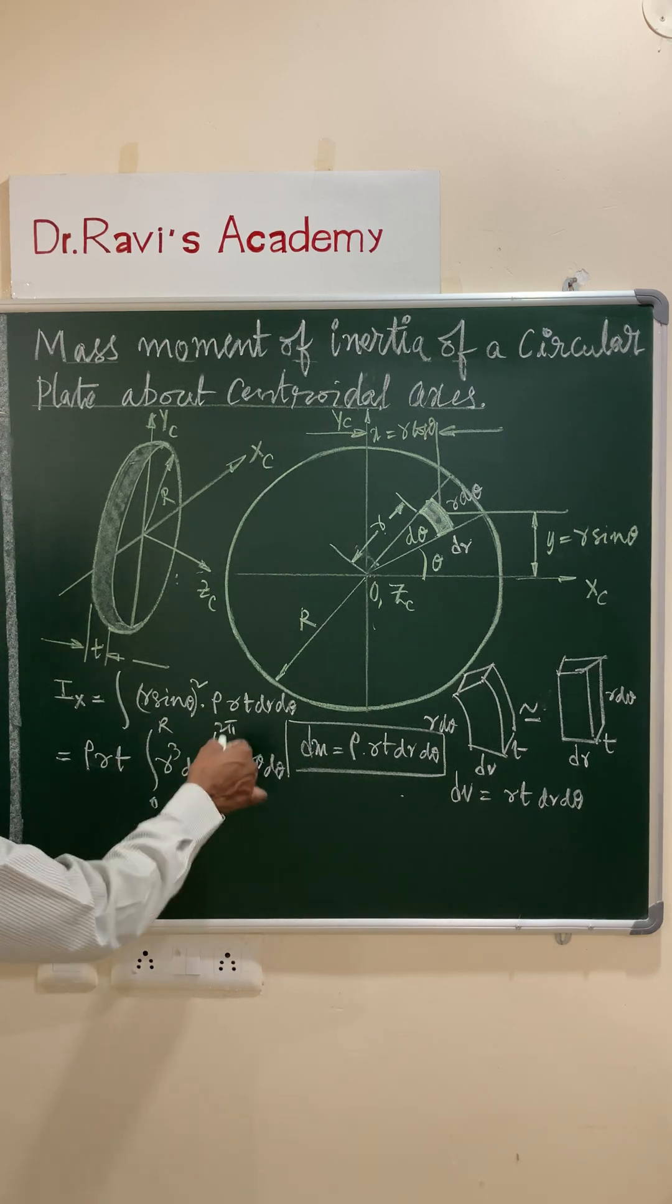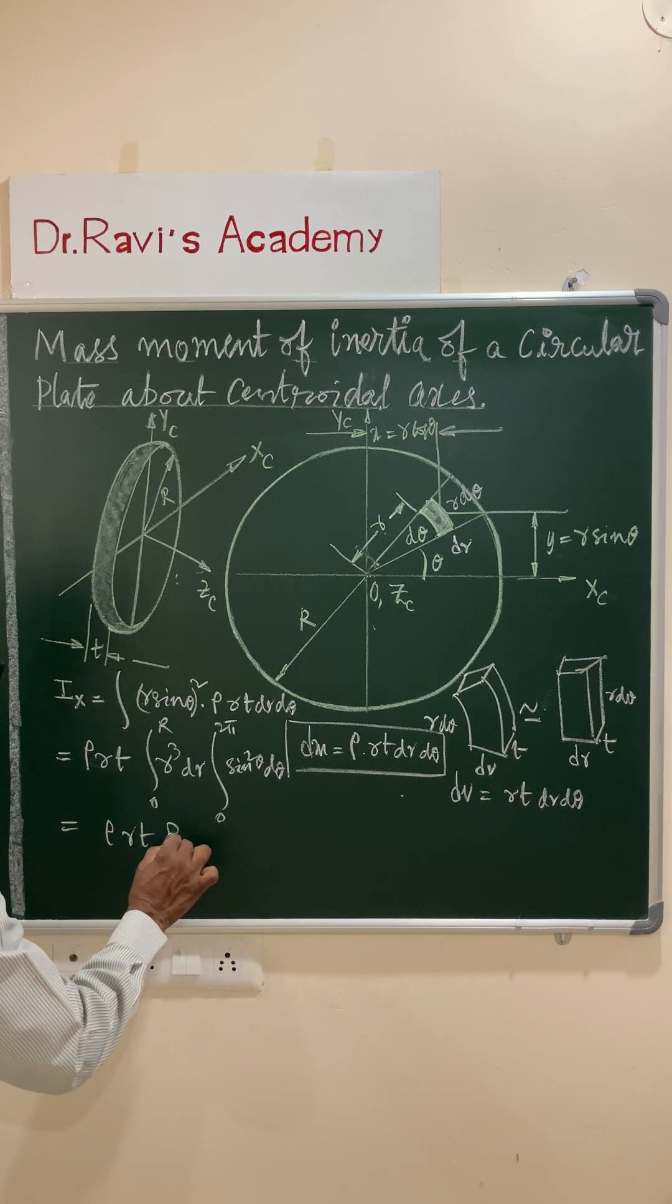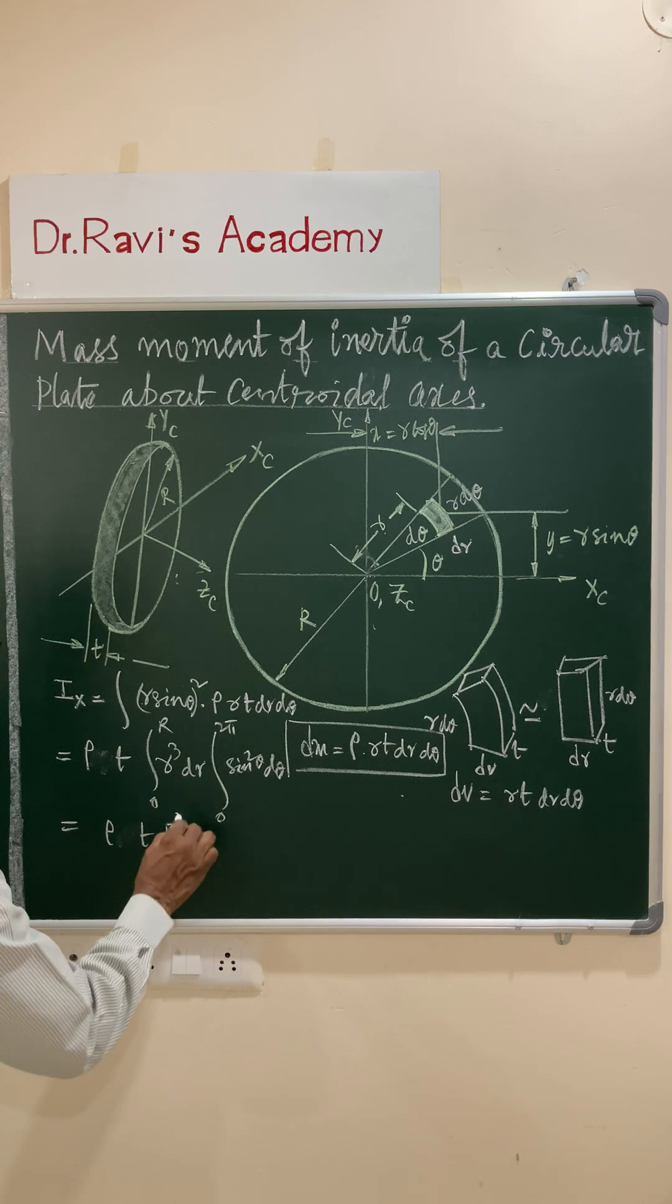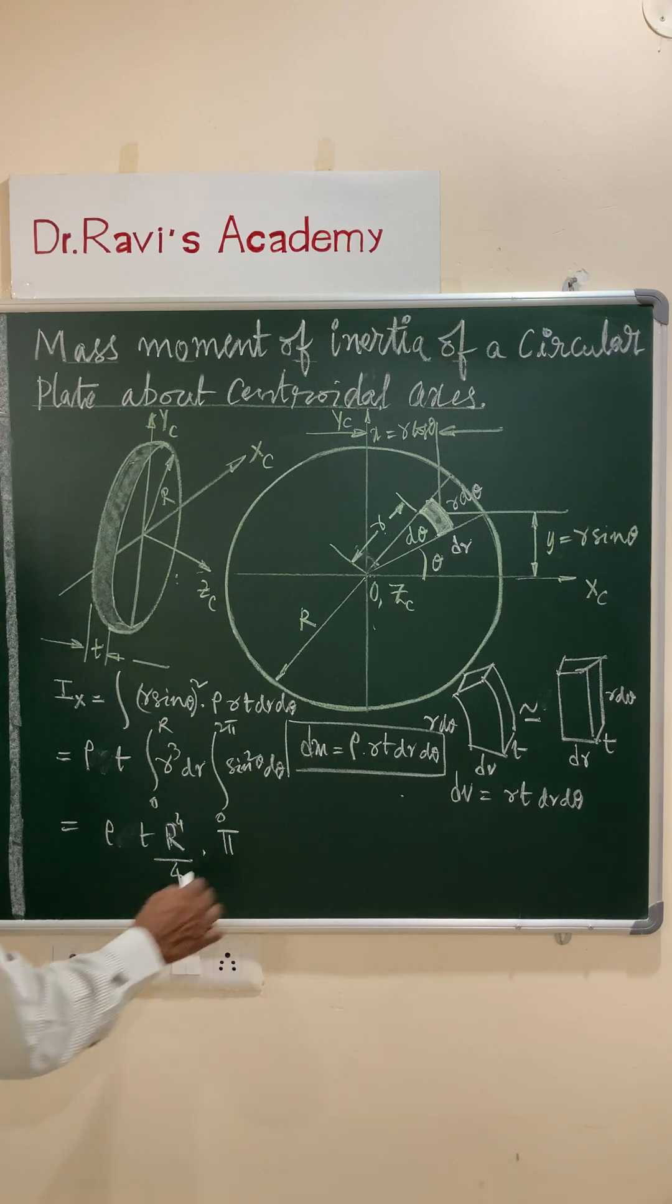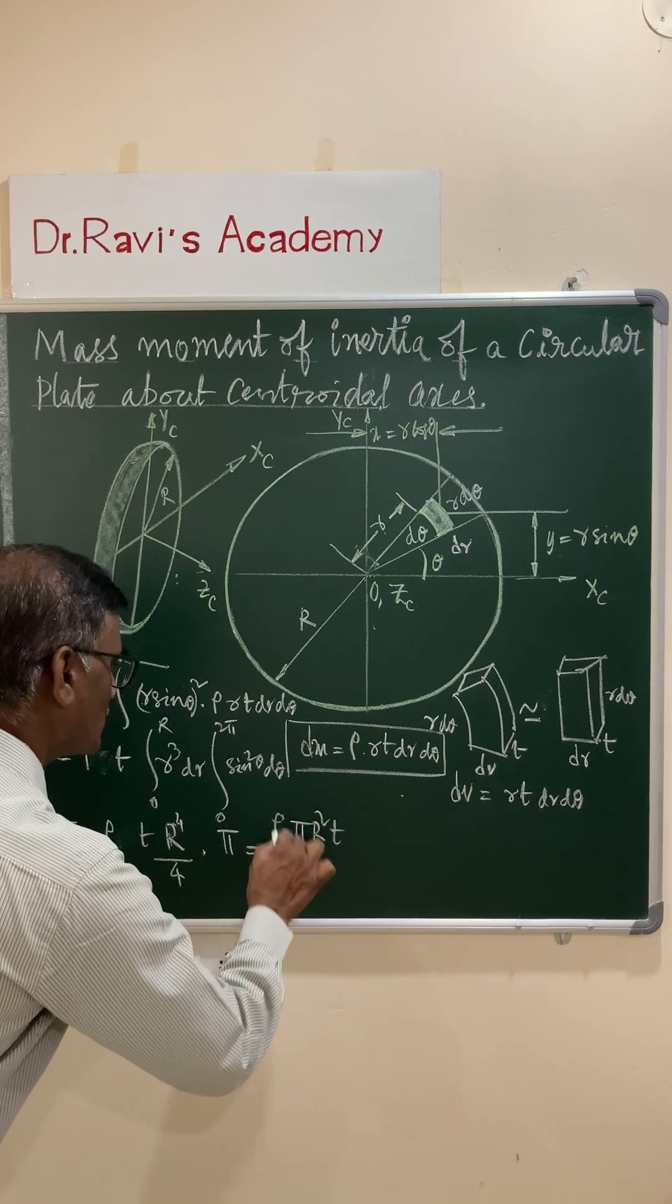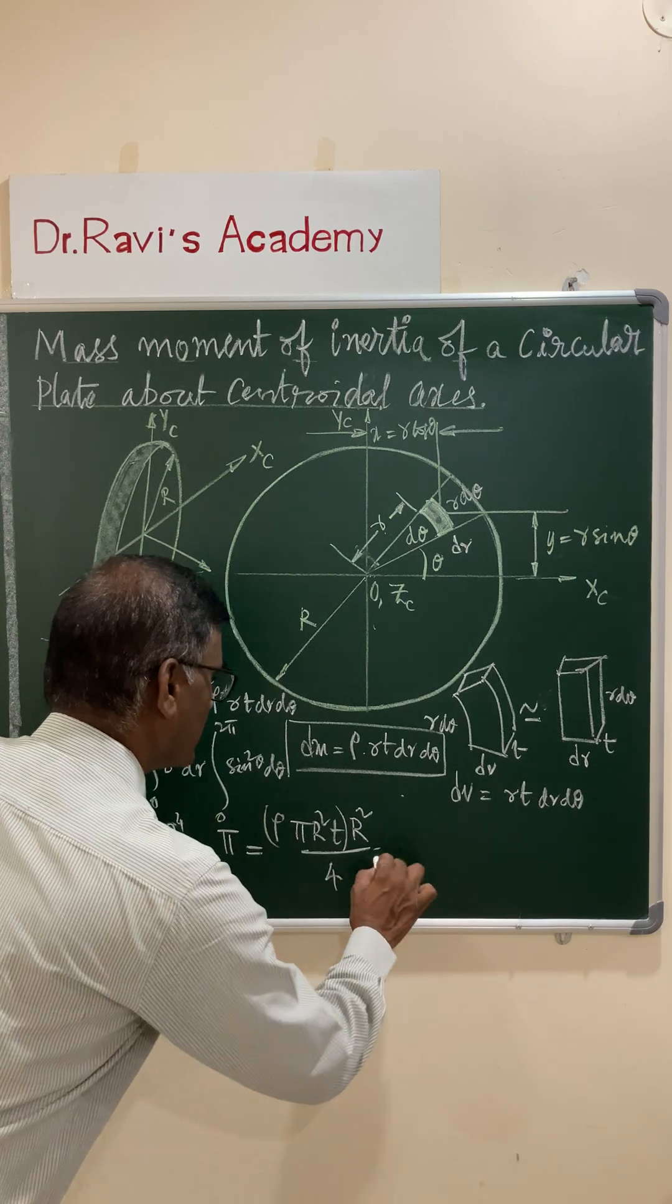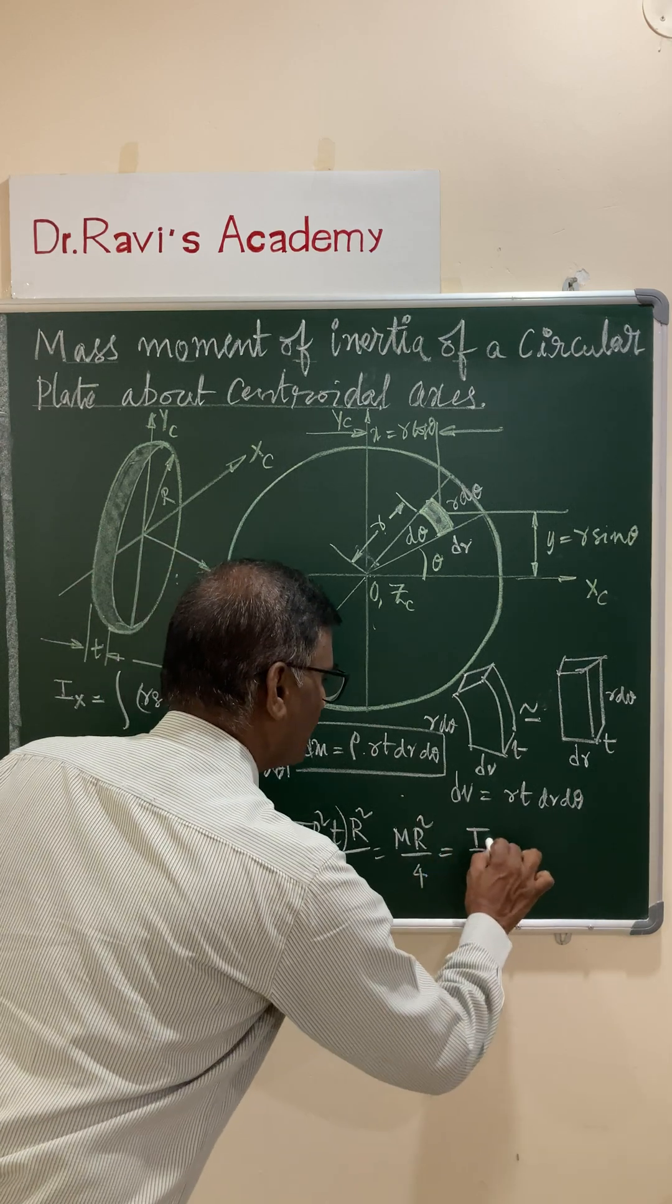This becomes r square by 4 and you can write down this value as pi r square into t into rho. This is your total mass of the circular plate. And this becomes m r square by 4, which is also equal to iy.